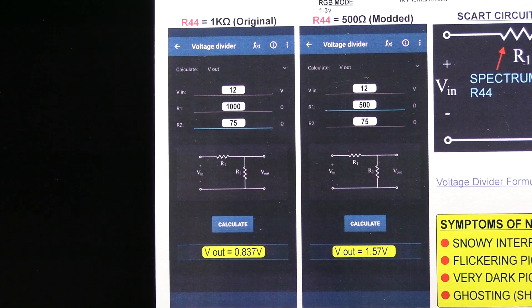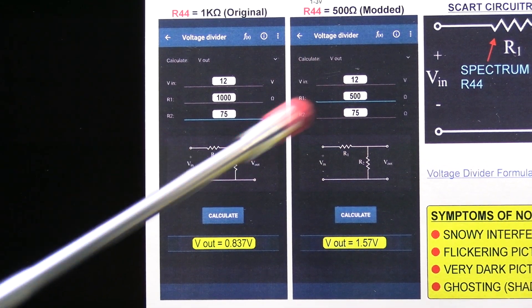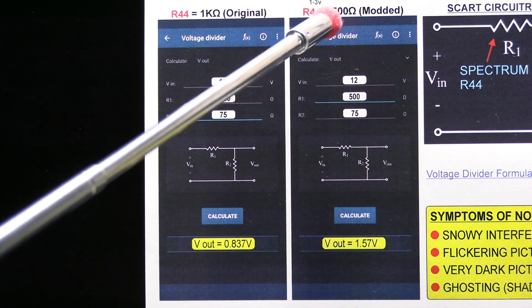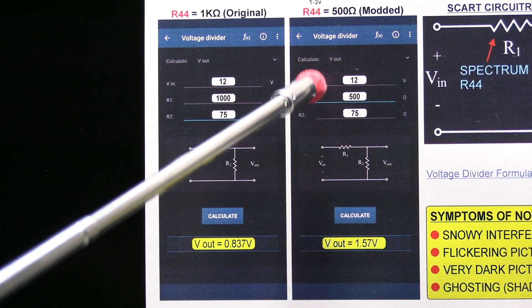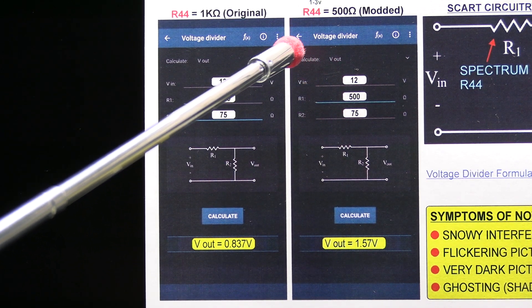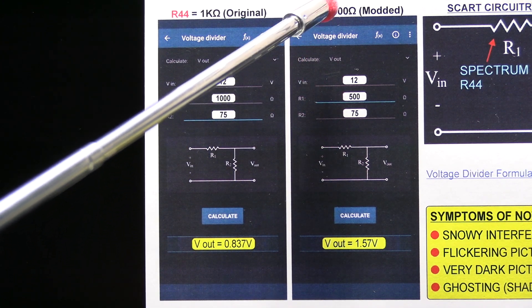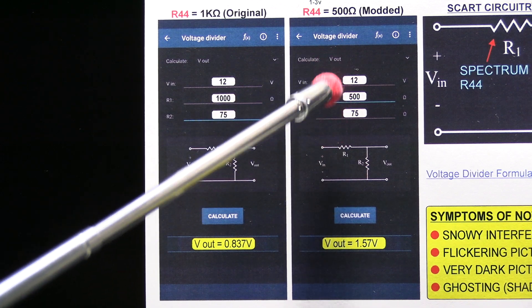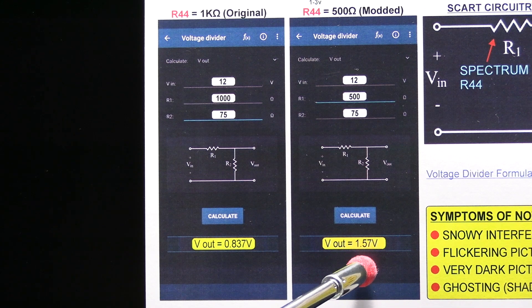The way to fix it is to reduce the value of R44 from 1k to about 500 ohms. It can be anywhere really between about 500 ohms and 680. But I choose 500 because it gives good voltage output. So if you reduce the resistance to 500, then the rest of the calculation stays the same and the voltage output then becomes 1.57.